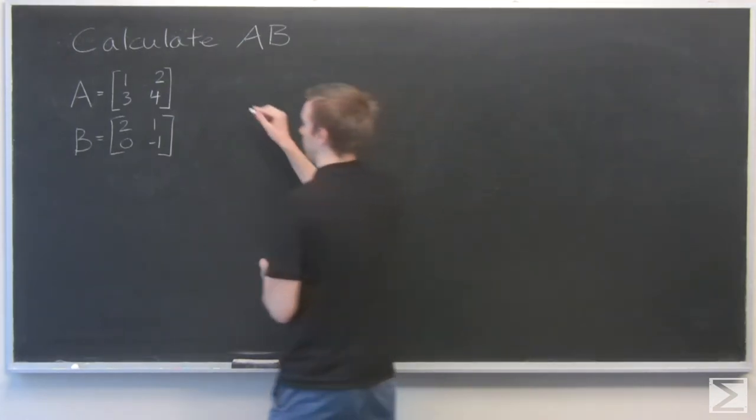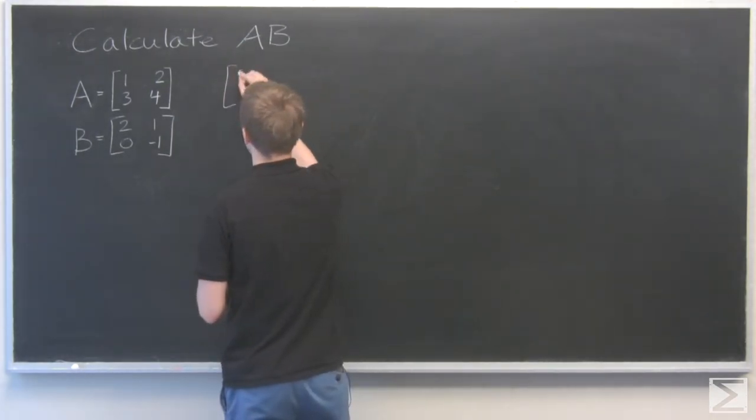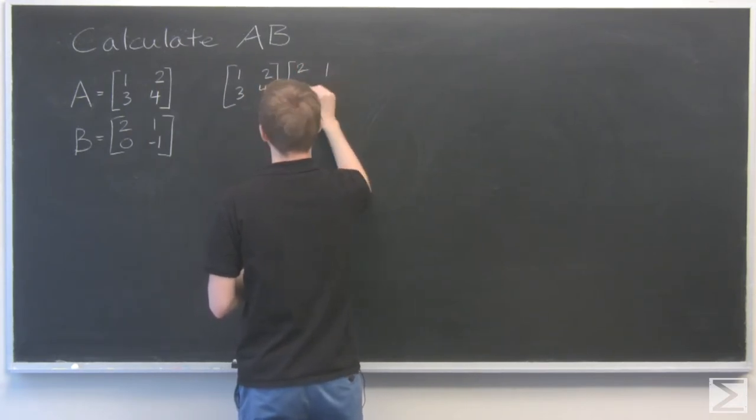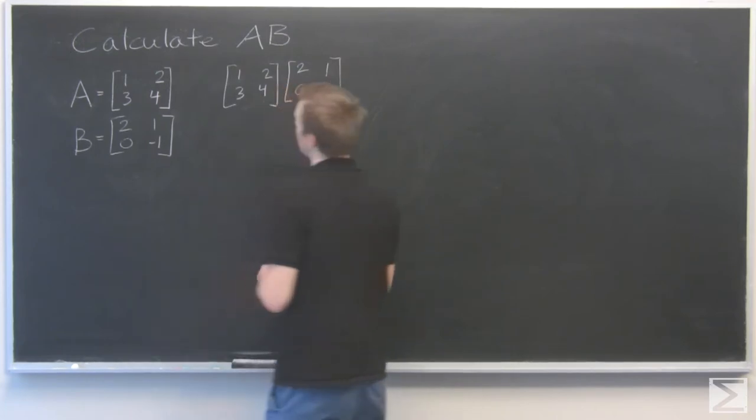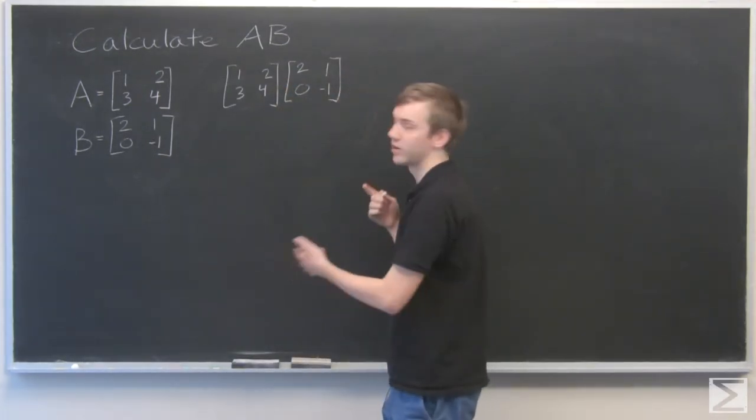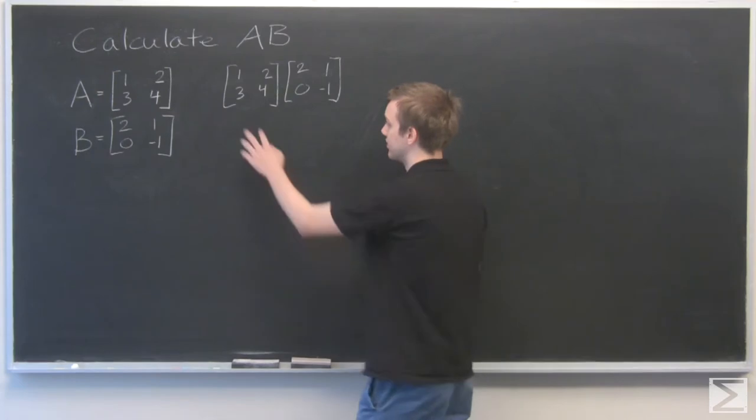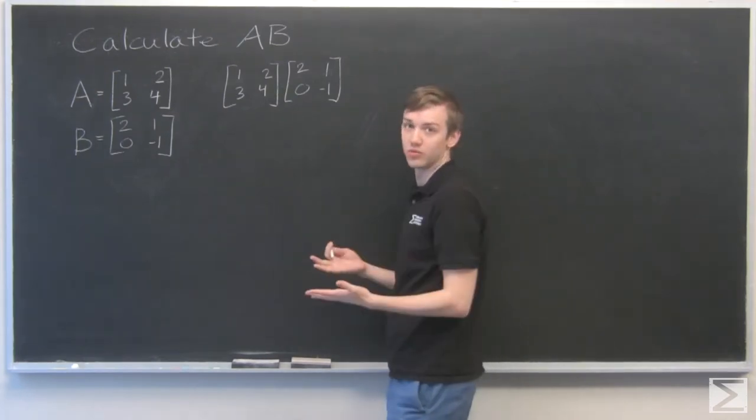So I'm going to put them next to each other. Luckily, they're both square matrices, which means this is 2 by 2 and this is 2 by 2, so we can multiply them.